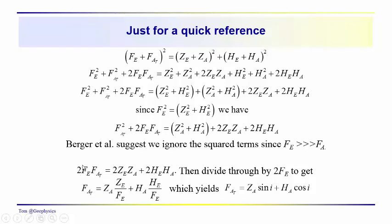Dropping those squared terms, we divide by 2·F sub E. We're left with F sub AT on the left, equal to Z sub A times Z sub E over F sub E — which we know to be the sine of the inclination — plus H sub A times H sub E over F sub E, which is the cosine of I. So we have F sub AT equals Z sub A times sine of I, plus H sub A times cosine of I. And this is the bottom line in the discussion.